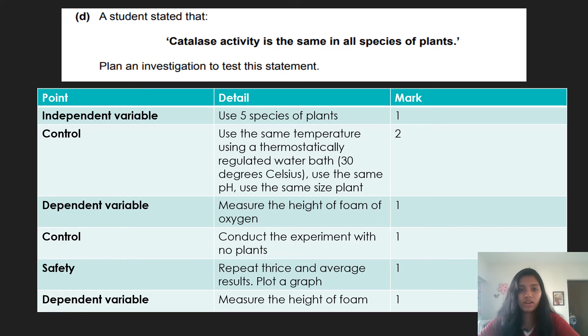So first you need to state your independent variable. So you're going to use five different species of plants. You get one mark. Then what are you going to do with those five different species of plants? You are supposed to add hydrogen peroxide. So your method mark is to add hydrogen peroxide.